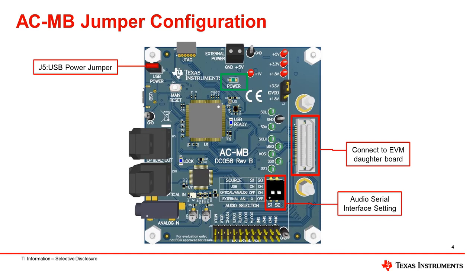We'll get started with ACMB configurations. First of all, connect the ACMB to the EVM using the group host. Since we are using the Audio Precision as our audio host, S0 will need to be set to off to disconnect the EVM from the USB audio interface. Short J5 for 5V USB power supply. You'll notice that the LED on D3 turns on when the ACMB is powered up.